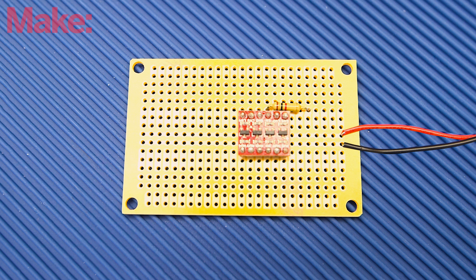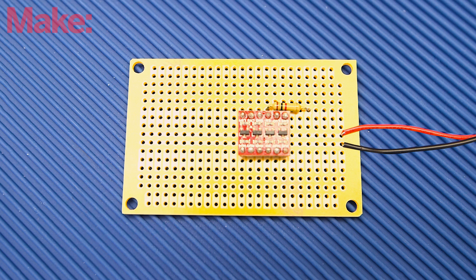Place a 1K resistor on the board as shown, running from LV on the logic-level converter board to a free row that will connect to the ESP8266 in the next step.